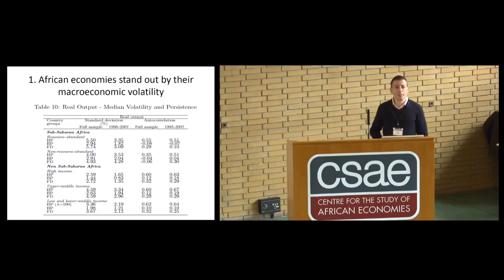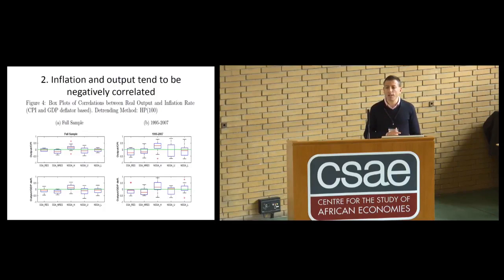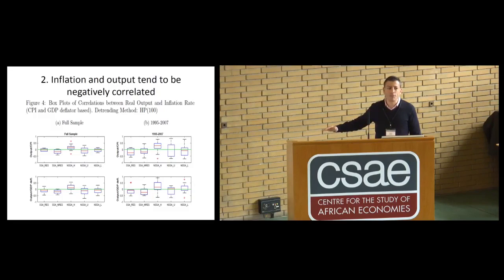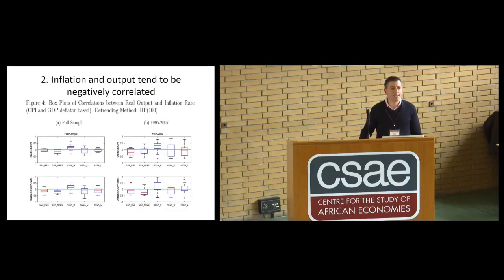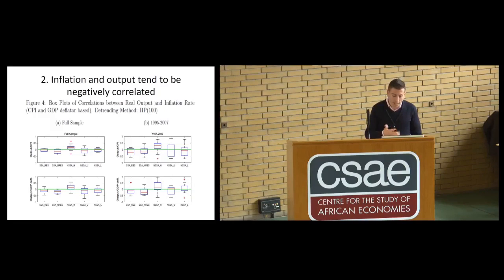Many in the macroeconomic literature find that when correlating output fluctuations with inflation, there is a negative relationship with per capita GDP — inflation and output are positively correlated in advanced economies, and the correlation turns negative in poorer economies. For Sub-Saharan Africa, almost all countries display a negative correlation between output and inflation. This can indicate the prevalence of aggregate supply shocks, consistent with the dominance of agriculture, where weather shocks cause prices and output to move in opposite directions.